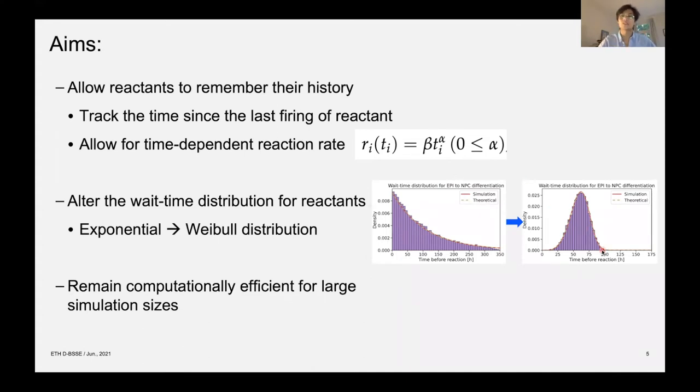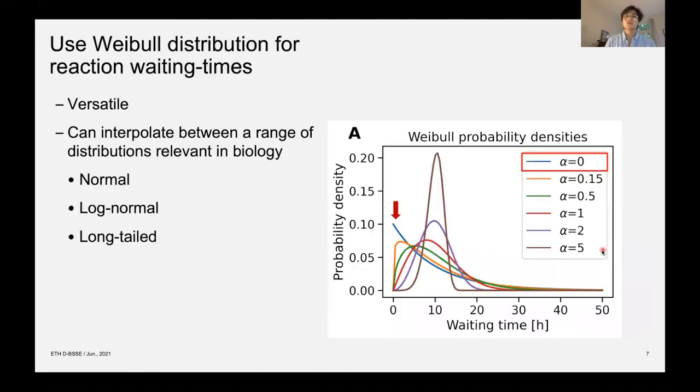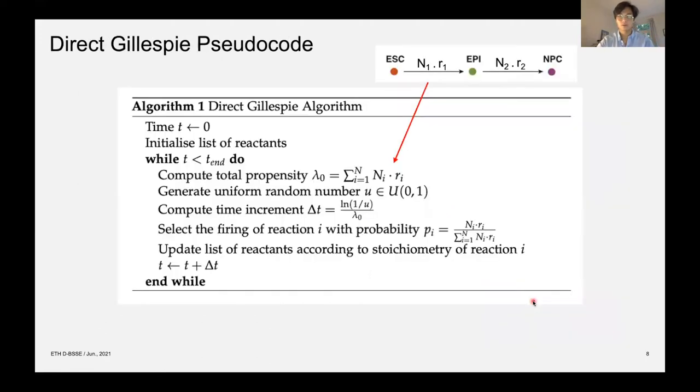At the same time, we still wish to remain computationally efficient for large simulation sizes and leverage the utility of direct Gillespie. We've chosen the Weibull distribution because it's a versatile distribution whereby we can use it to interpolate between a range of distributions that are relevant in biology. For example, the normal, the log-normal, and the long-term distributions. And you can see in the figure here, by setting the alpha parameter to zero, we actually recover the exponential distribution.